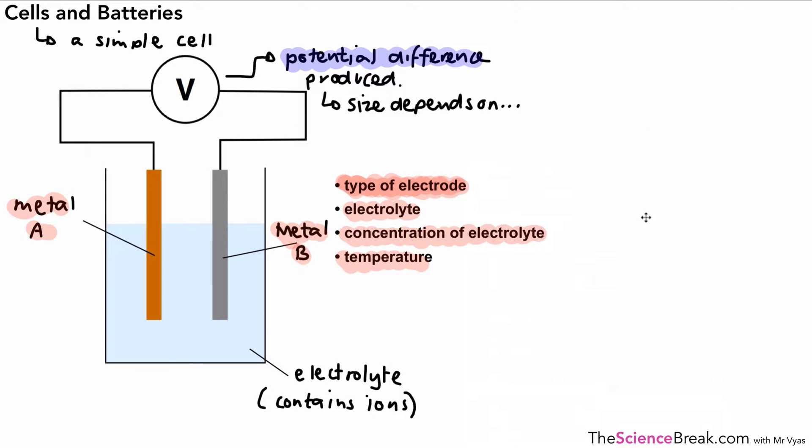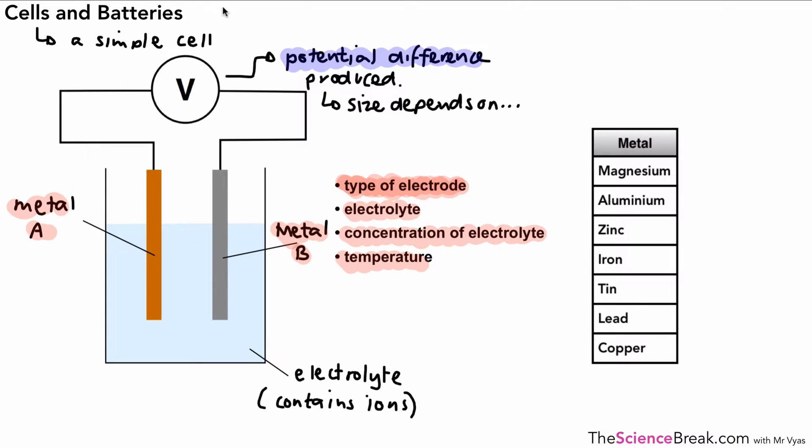Let's take a look at the type of electrode and what kind of effect that has. For this we need our reactivity series of metals. So here's a small portion of that, and we can determine or make a judgment on the size of that potential difference by looking at the difference in reactivities of the metals that you're using.